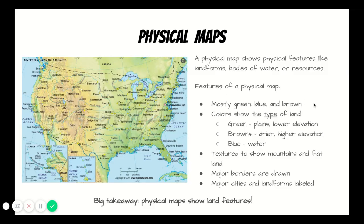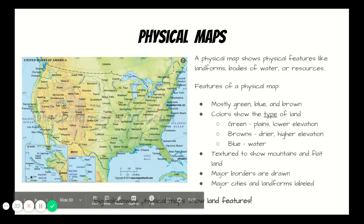Some of the features of a physical map: they are mostly green, blue, and brown — showing land and water. The colors show the type of land. The green areas are the plains or lower elevation land. Browns are drier or higher elevation land. And the blue is water. Physical maps are textured to show mountains as well as flat land. The major borders are drawn and the major cities and landforms are labeled. The big takeaway for physical maps is that they show land features.